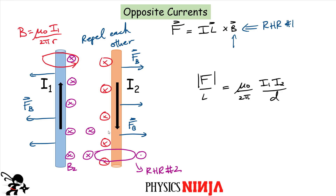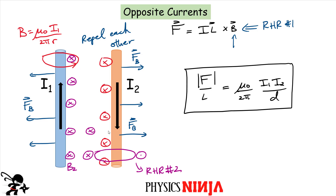The magnitude of the forces in the anti-parallel case is the same expression as the parallel case: F/L = (μ₀ / 2π) · I1 · I2 / D — it depends on both currents and the distance between them, giving the force per unit length acting on each wire. Thanks for watching, folks. Hopefully you've learned something in this video.